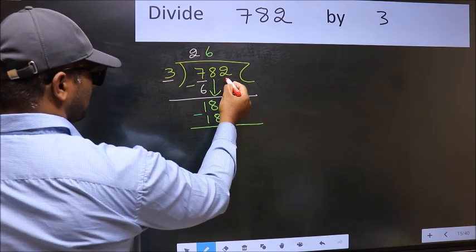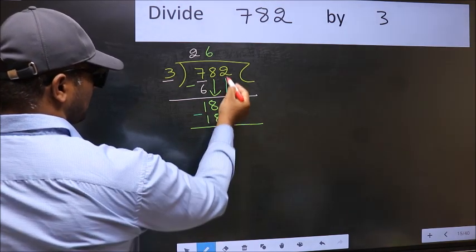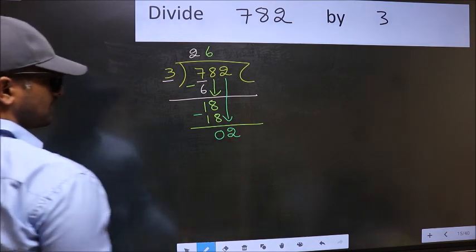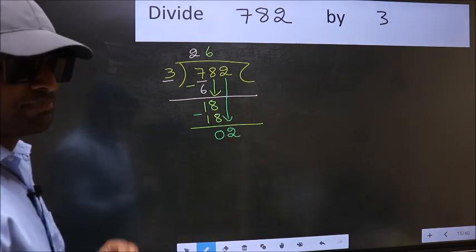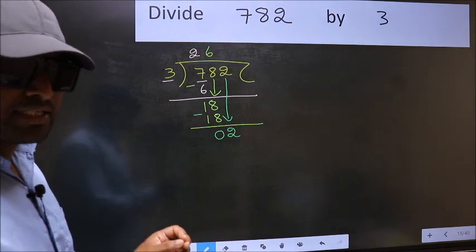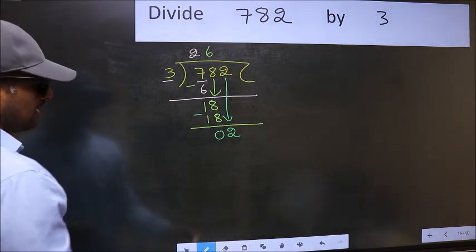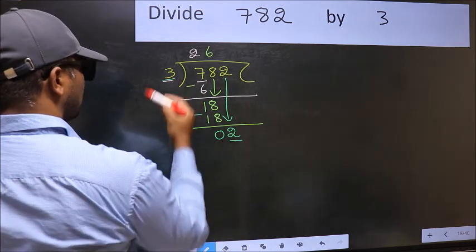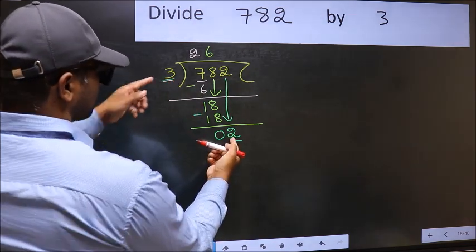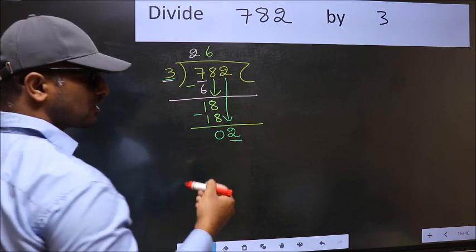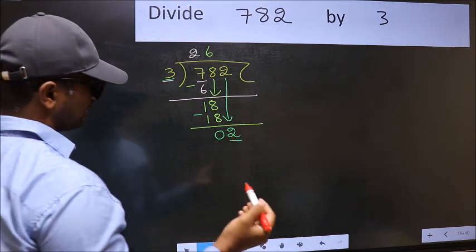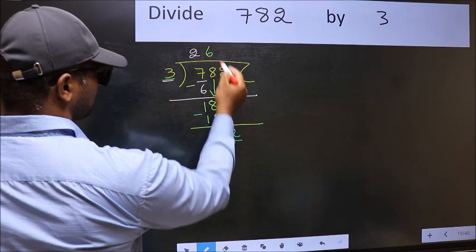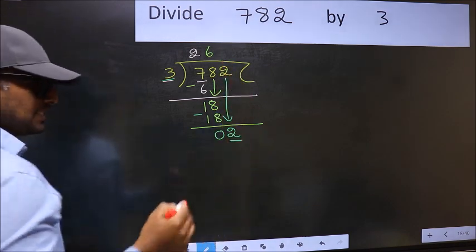After this, bring down the beside number. So, 2 down. After this step, the mistake happens and the mistake is this. Here we have 2 and here 3. 2 is smaller than 3. So what many do is they directly put a dot and take 0, which is wrong.